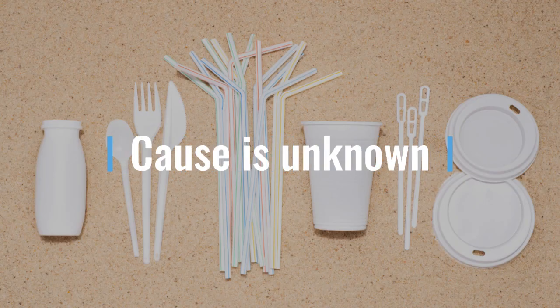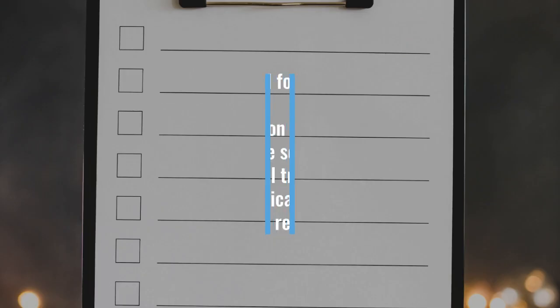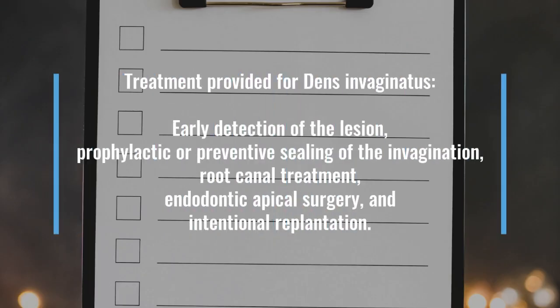The causes behind both conditions are still unknown to date. The problem with dens invaginatus is that having a tooth embedded within the pulp can cause an infection to the pulp, and doing root canal treatment (RCT) is very difficult but possible. The treatment for dens invaginatus includes: early detection of the lesion, prophylactic or preventive sealing of the invagination to prevent further damage to the pulp, RCT if there is pulp invasion, endodontic apical surgery, and intentional re-implantation.